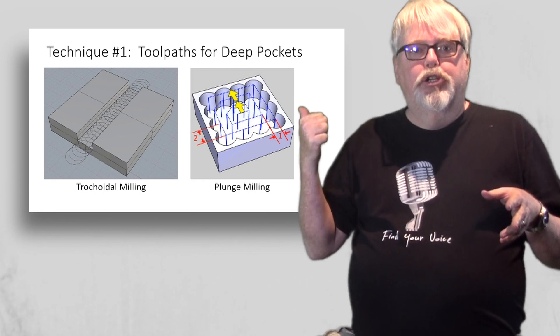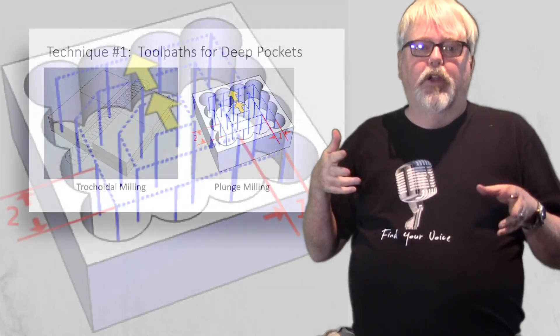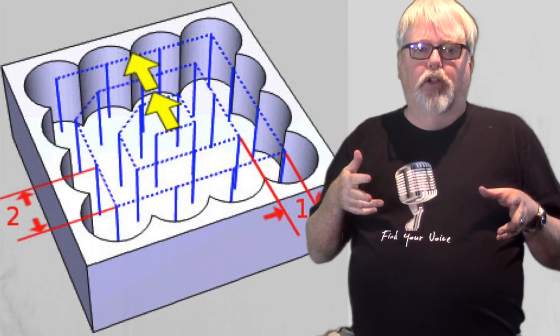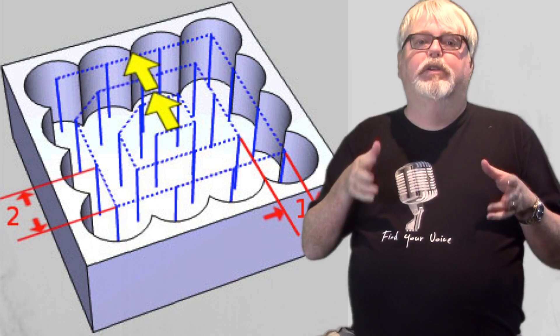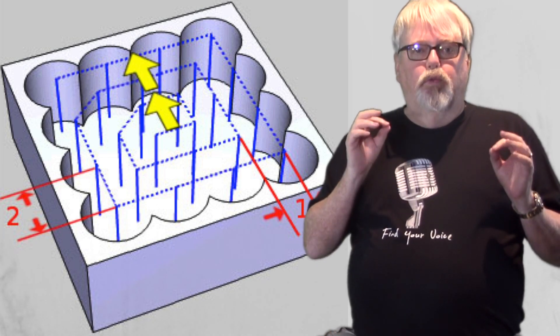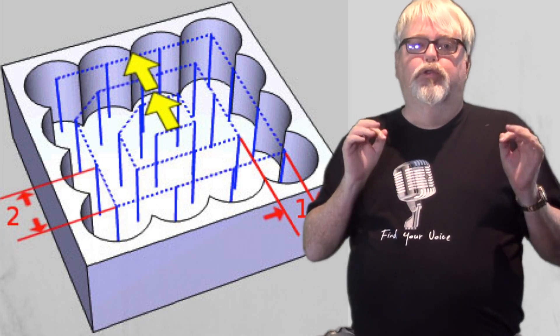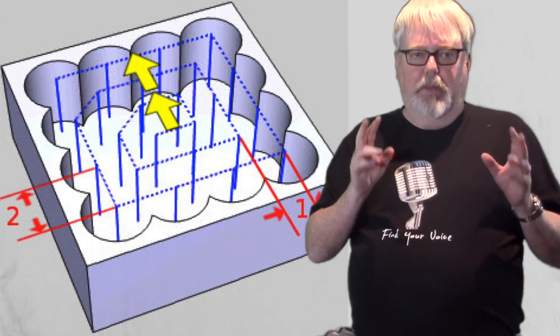Another approach is plunge milling. Here the cutter is plunging into the material so that most of the cutting forces are along the axis of the cutter. With radically less side force, your tool deflection is once again minimized.